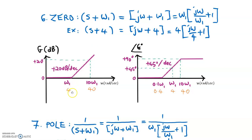So 4 is the corner frequency for this zero function. For magnitude, the starting point for a zero is 0 dB. For frequency less than 4, the slope is 0 dB per decade. For frequency larger than 4 until the end, the slope is positive 20 dB per decade.